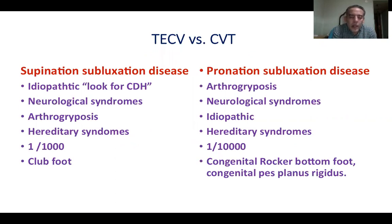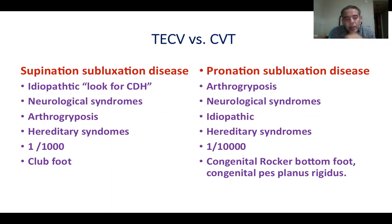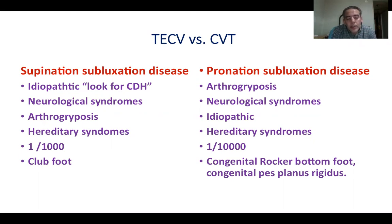Talipes equinovarus is a supination subluxation disease of the subtalar joint. It's a common disease — one in a thousand. The idiopathic type is the commonest type, meaning you have talipes in an otherwise normal child, but you have to be vigilant looking for associated neurological syndromes and arthrogryposis. Sometimes it's encountered in hereditary syndromes. The other name for it is clubfoot.